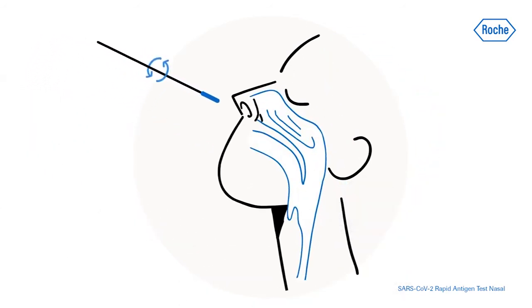Rotate the swab while inserting it two centimeters, slightly less than one inch, into the nostril and parallel to the palate until resistance is met at the turbinates.